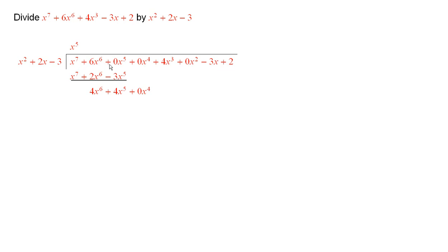And the thing to observe is that we include 0x to the 5th, 0x to the 4th, 0x squared, and so forth. Because we do not want to lose track of the various powers of x.